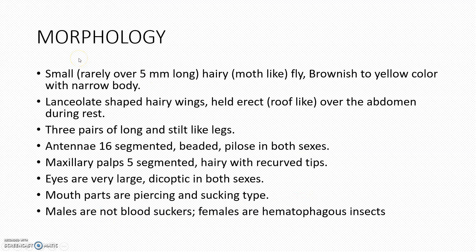Moving to the morphology: they are small, hairy, brownish to yellow in color with a narrow body. The antenna has 16 segments. Males are not bloodsuckers; females are the bloodsuckers, and the mouthparts are of piercing and sucking type. Eyes are very large, dichoptic in both sexes.